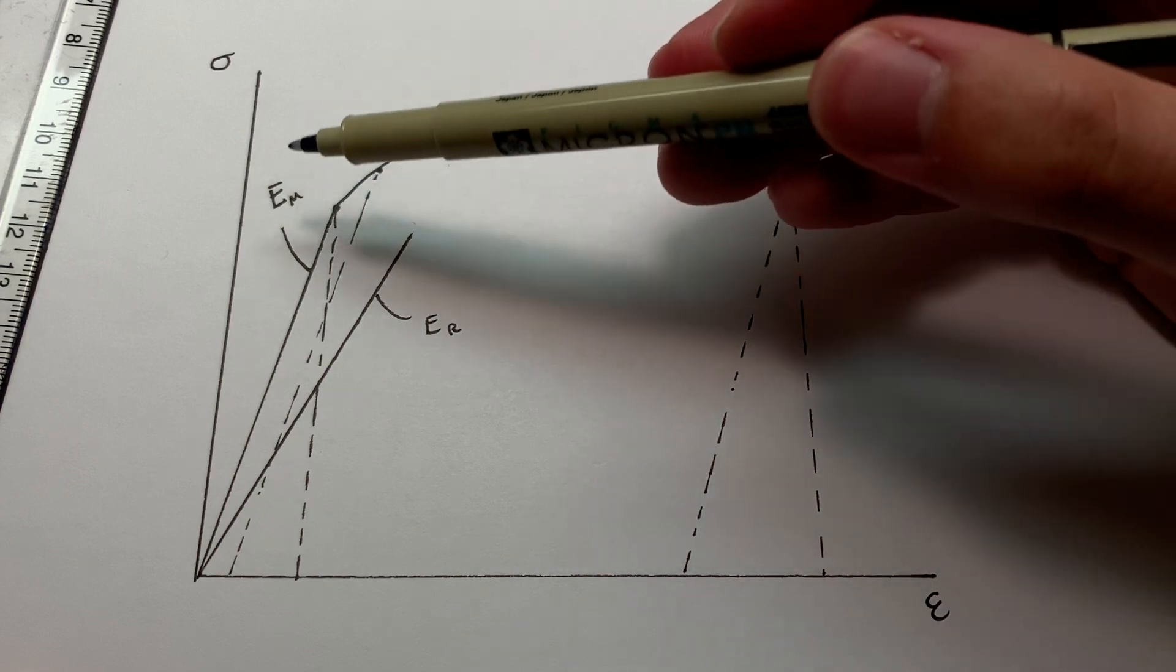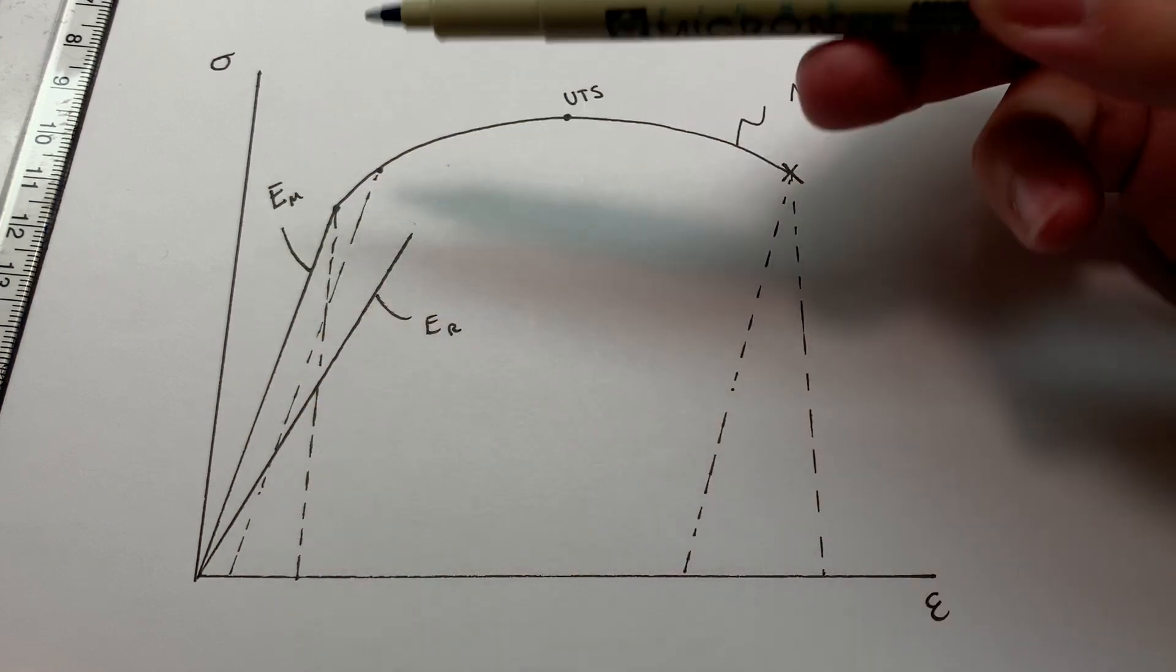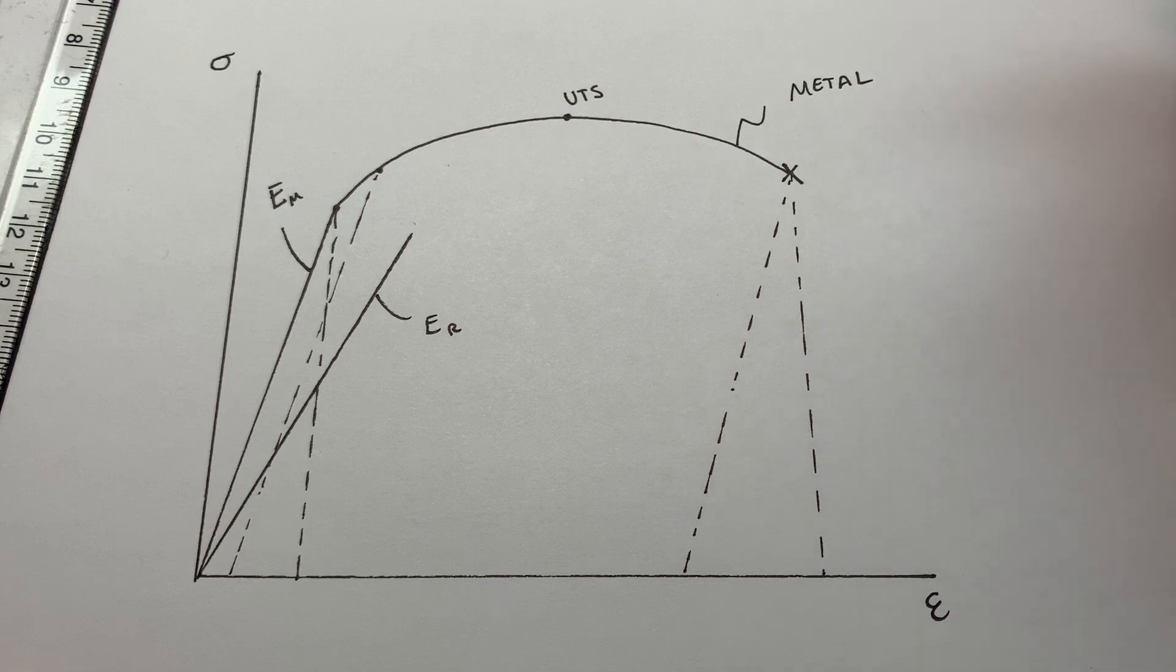So you'd say, okay, the elastic modulus of the metal is higher. And that is true in most cases.